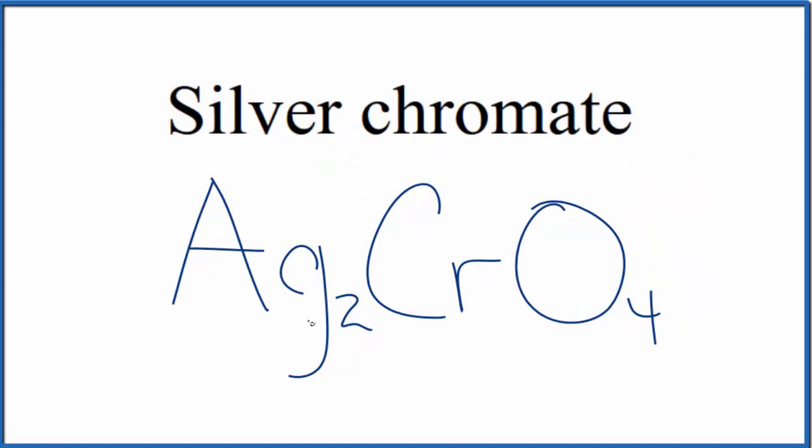If you were given the formula and asked to write the name, you know we have this chromate ion right here, and then we have silver. So silver chromate.